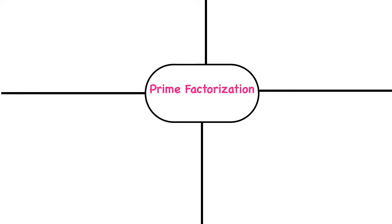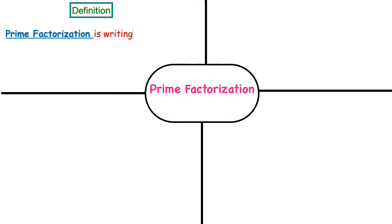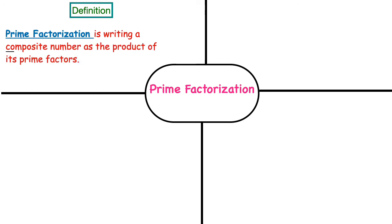Let's start by looking at that word prime factorization. The definition says that prime factorization is writing a composite number as the product of its prime factors.